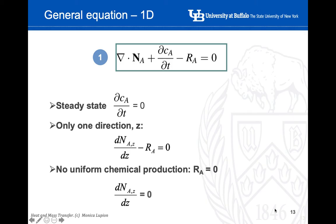We're going to do exactly the same. Let's begin with the general equation of conservation. We can assume that in a membrane process it is at steady state — so there is no accumulation of the element inside the membrane. We can also assume that transfer happens only in one direction and that there is no uniform chemical production. Therefore, the final simplified equation is that dN_A/dz equals zero, meaning the molar flux is constant through the membrane.